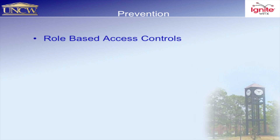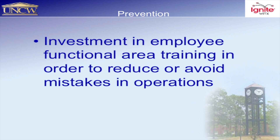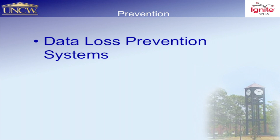Investment in employees — we give training on how to avoid simple mistakes. We want to make them aware of things that could be catastrophic to our environment, whether intentionally or unintentionally, willingly or unwittingly. Data loss prevention systems prevent the exfiltration of data through egress — for example, sending out sensitive information like social security numbers through emails. Automated systems can help us prevent that.